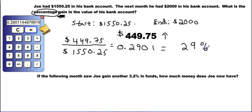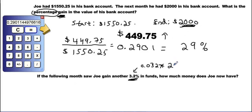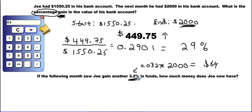The following month, Joe gains another 3.2% of funds. His new starting point is $2,000. We calculate 3.2% as a decimal: 0.032 × $2,000 = $64. So Joe gains $64 in the next month.